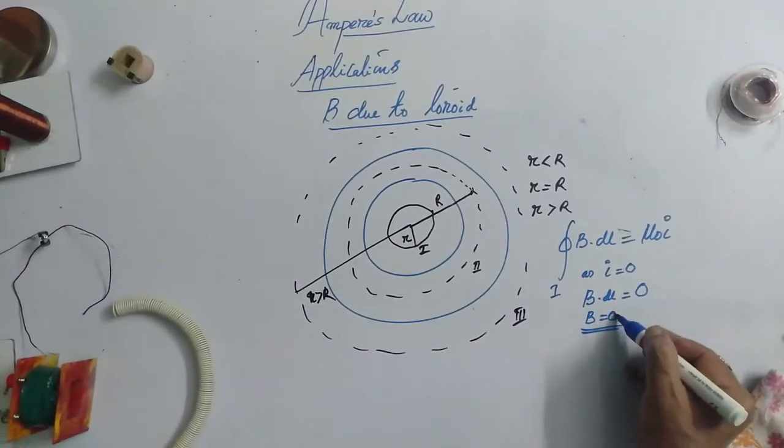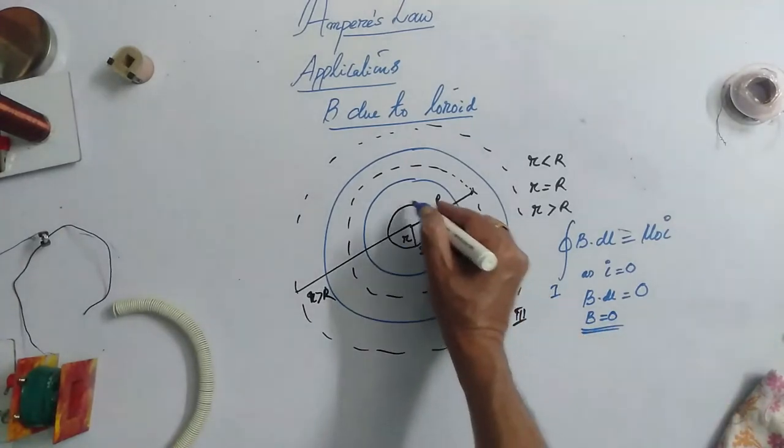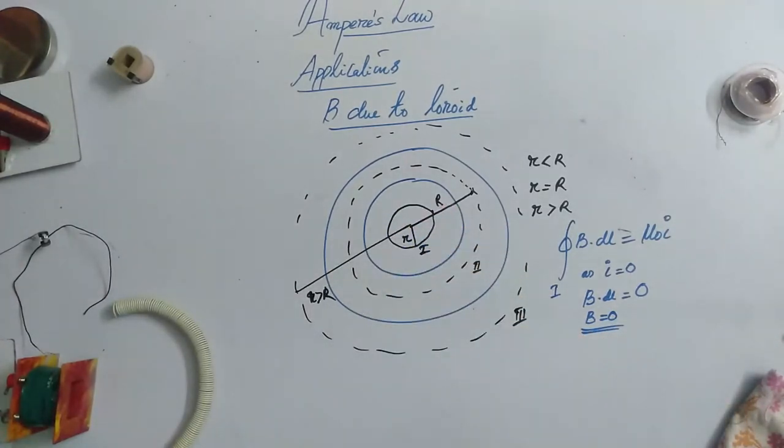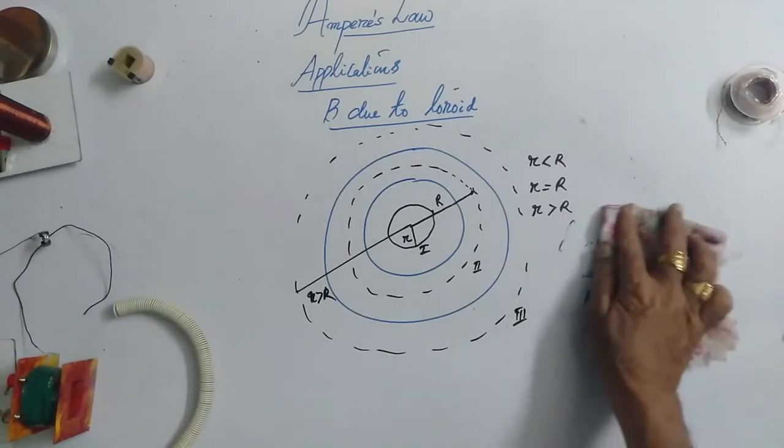So, this is the inner loop. That is, this is first loop. Now, let's do for the second loop. In the case of second loop, in this, current is also there.